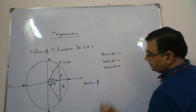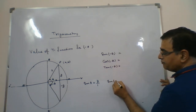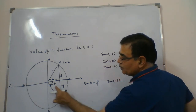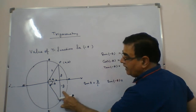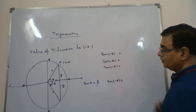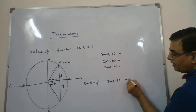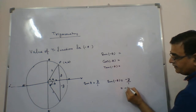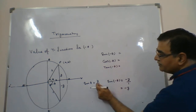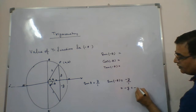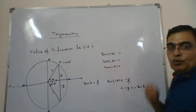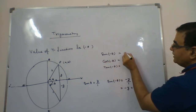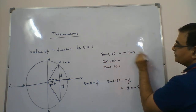Now I take the reflected triangle where the angle is minus theta. For sine of minus theta, the perpendicular is minus y and the hypotenuse is again 1. So sine of minus theta comes out to be minus y by 1, which is minus y. Since y equals sine theta, it comes out to be minus sine theta.